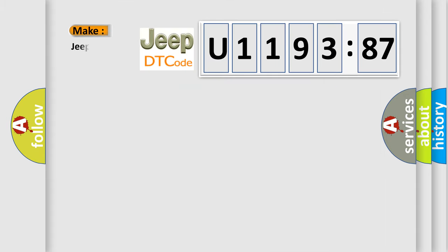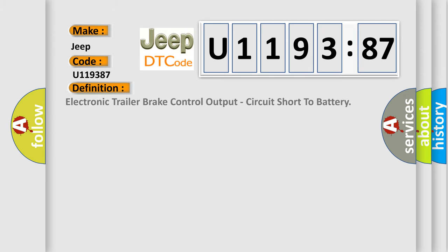So, what does the diagnostic trouble code U119387 interpret specifically for Jeep car manufacturers? The basic definition is: Electronic trailer brake control output circuit short to battery.